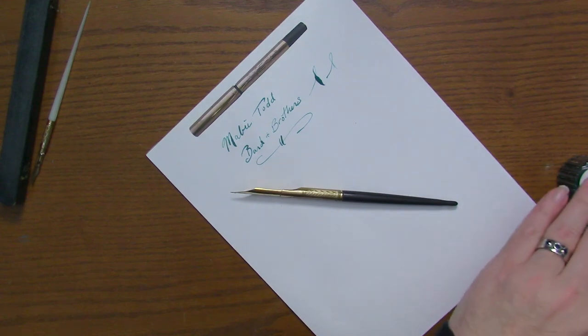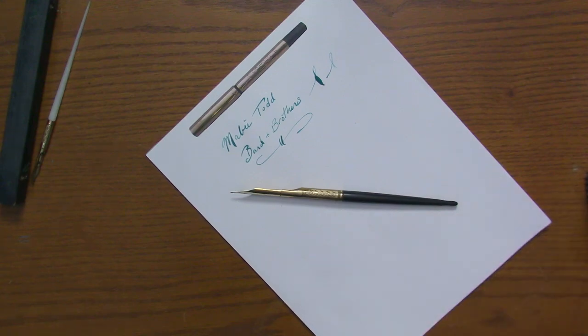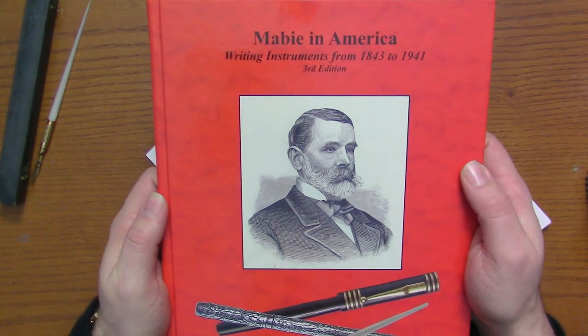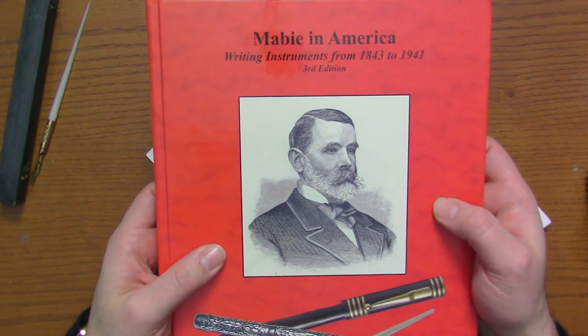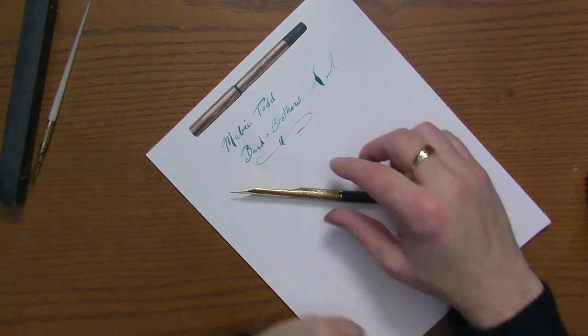But if you have any more interest in Mabie Todd and Bard & Brothers, definitely recommended book, if you can find it, is the David Moke book, Mabie in America, writing instruments from 1843 to 1941. This is out of print, but if you could find it, it's definitely worth the read.